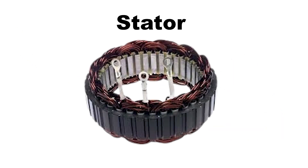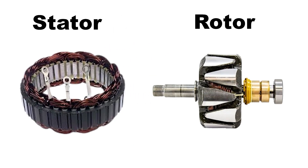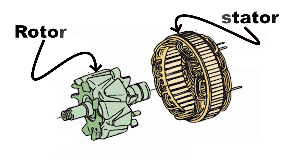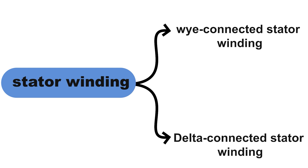First, let's cover the basics. The stator is the stationary part of an alternator. It contains multiple windings or wires that generate voltage when the rotor's magnetic field passes through them. The rotor spins inside the stator, and an air gap prevents physical contact between the two. Most alternators use three windings in the stator to produce three-phase alternating current. These windings can be arranged in two main configurations: the Y connection and the delta connection.